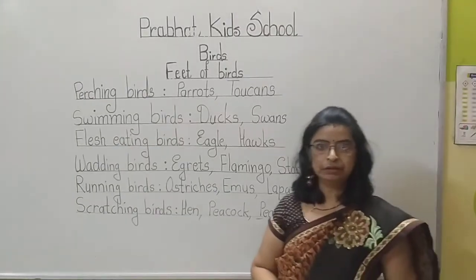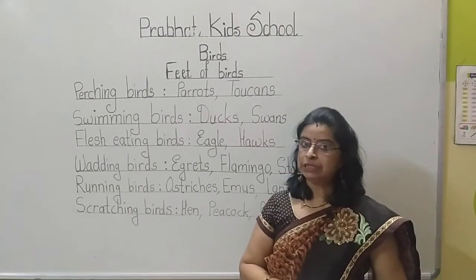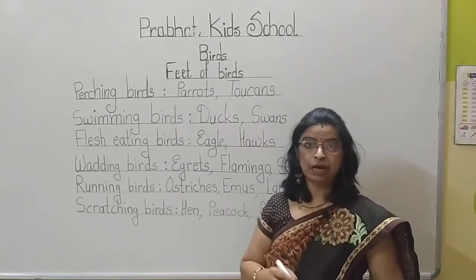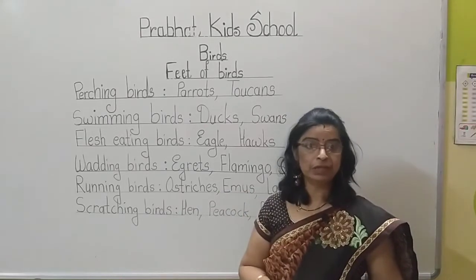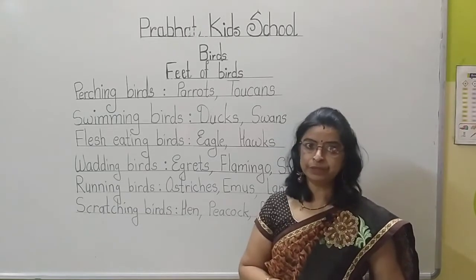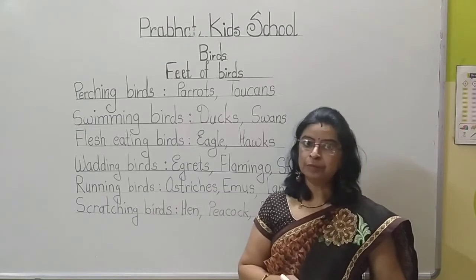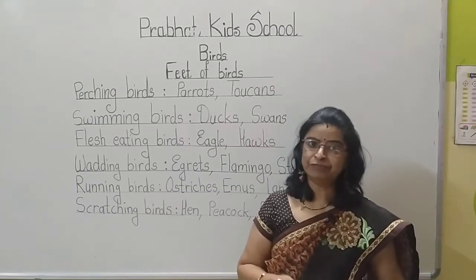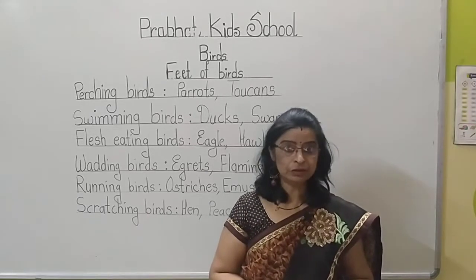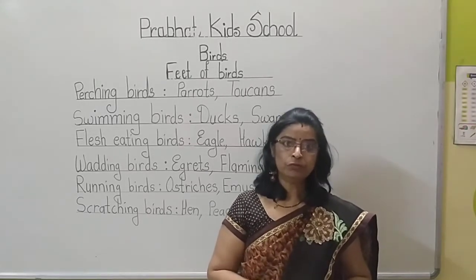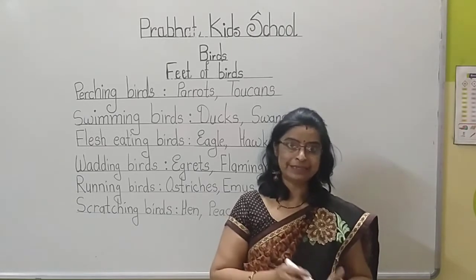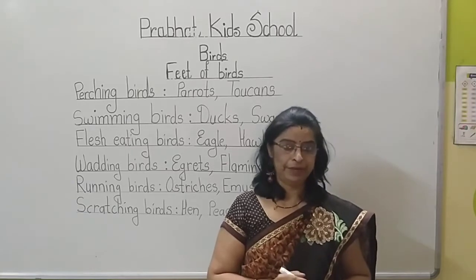Good morning students. Previously we learnt about the body parts of the bird and how they fly — with the help of wings they can easily fly in the sky. We also learnt about the wings of the bird: different birds have different types of wings. And the shape and size of a bird's beak depends on what type of food they eat.